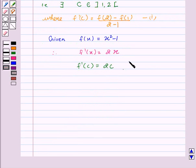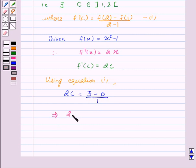Putting this value in equation first, we get 2c equal to F(2) minus F(1). And F(2) is equal to 3 minus F(1) is 0 upon 2 minus 1 is 1. This implies 2c equal to 3. This implies c equal to 3 by 2, which is the element of open interval (1, 2).